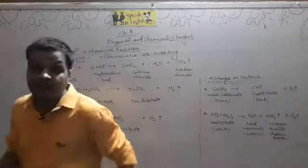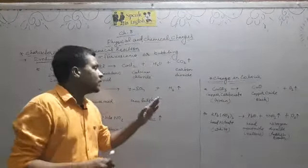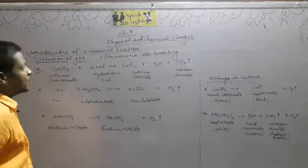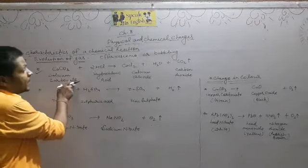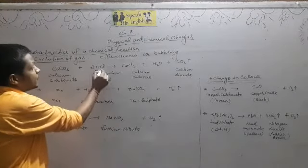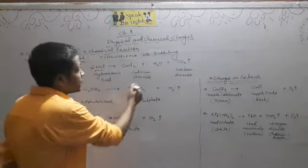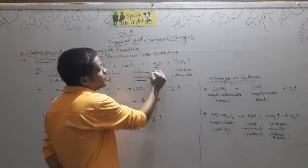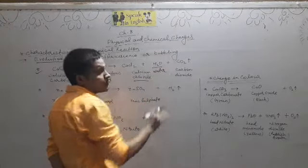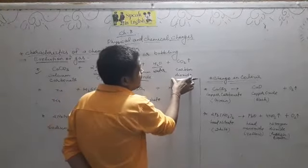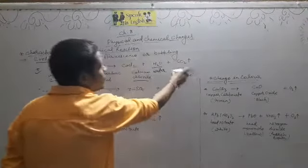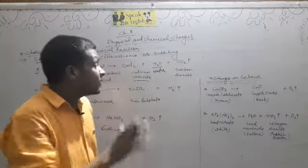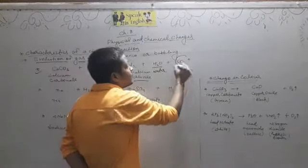Let's see some examples. First one is calcium carbonate. Whenever calcium carbonate reacts with hydrochloric acid, it gives us calcium chloride plus H2O (water), and it releases carbon dioxide. यहाँ से CO2, carbon dioxide gas evolve होती है.